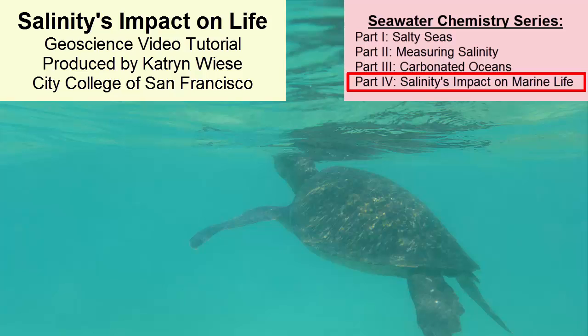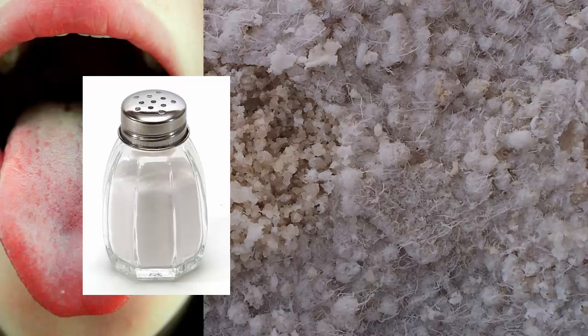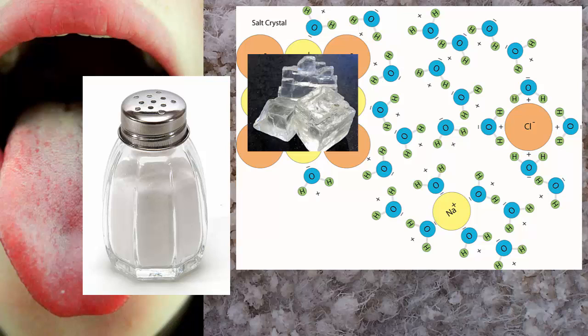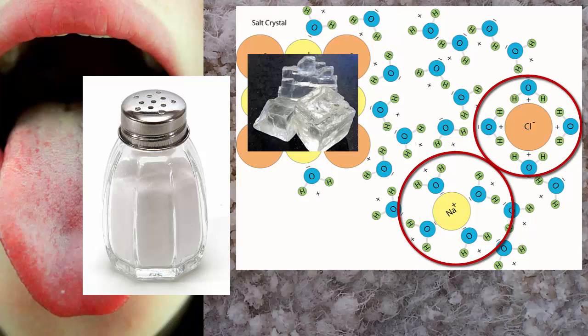How are marine organisms affected by ocean salinity? To answer that question, let's explore our own relationship with salt and salty waters. When we put salt crystals on our tongues, the crystals dissolve. The salt in the ocean is really just a lot of dissolved ions surrounded by clinging water molecules, and that's what we taste when we put salt on food — we're not actually tasting the solid salt, but the dissolved ions of sodium and chloride in our saliva.